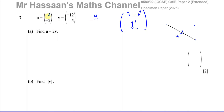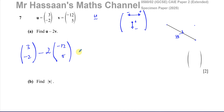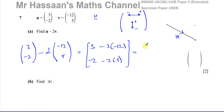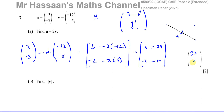The first part says find u minus 2v. That's a simple vector arithmetic question. You take vector u = (3, -2) and subtract 2 times vector v = (-12, 5). So the horizontal component is 3 minus 2 times (-12), and the vertical component is -2 minus 2 times 5. It's very important when you don't have a calculator to write steps carefully because it's easy to make sign mistakes. That gives -2 minus 10.